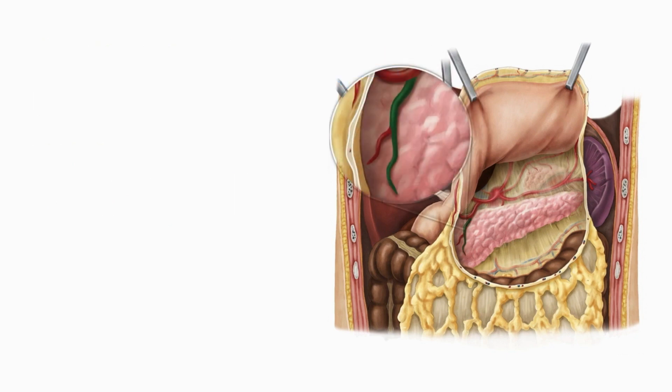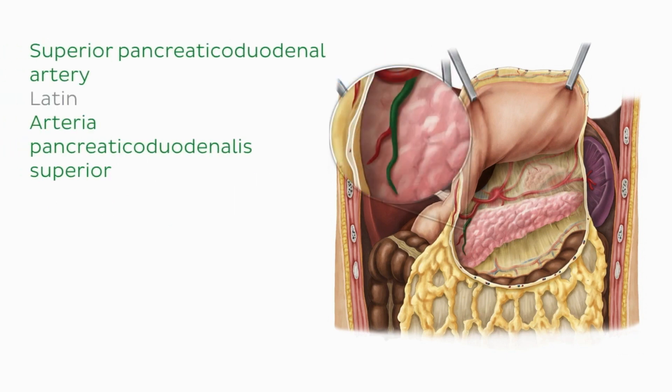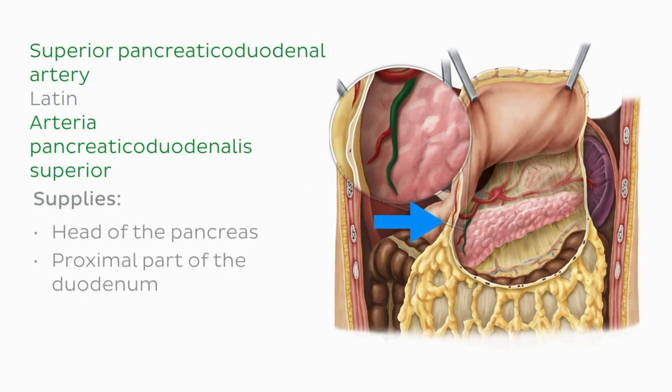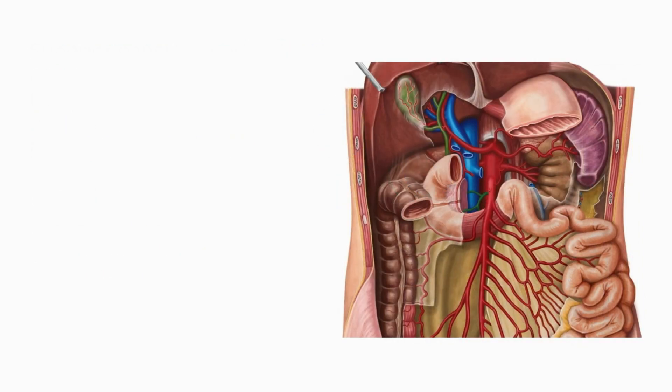The next branch of the gastroduodenal artery is the superior pancreaticoduodenal artery, which supplies the head of the pancreas and the proximal part of the duodenum. As it descends, it divides into posterior and anterior branches, which anastomose with the respective branches of the inferior pancreaticoduodenal artery of the superior mesenteric artery.